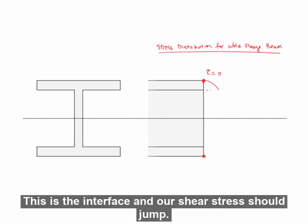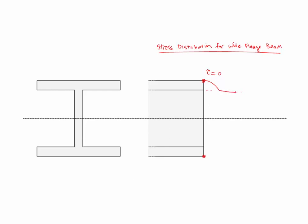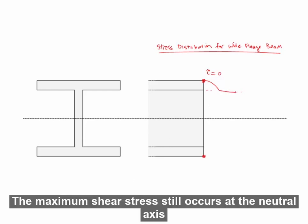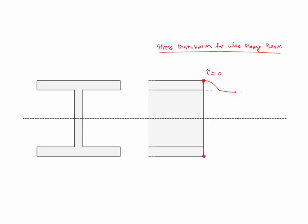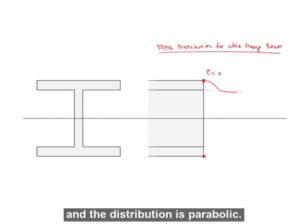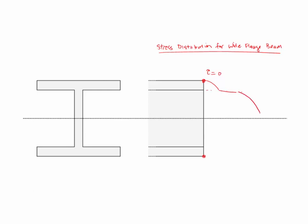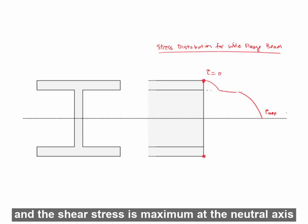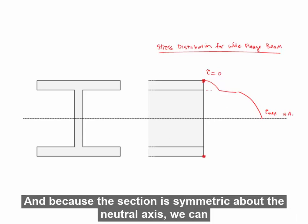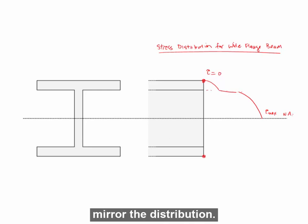Drawing that here, this is the interface, and the shear stress should jump. The maximum shear stress still occurs at the neutral axis, and the distribution is parabolic. So the shear stress is maximum at the neutral axis. And because the section is symmetric about the neutral axis, we can mirror the distribution.